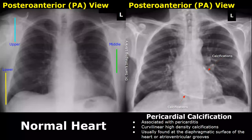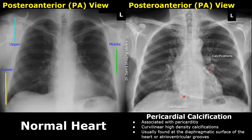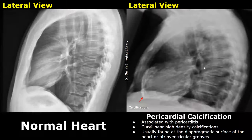Pericardial calcification can be seen on an X-ray and is usually associated with pericarditis. On X-ray, curvilinear high-density calcifications are seen — these radio-opaque bright areas are usually found at the diaphragmatic surface of the heart or the atrioventricular grooves. These calcifications are seen much better in a lateral view.